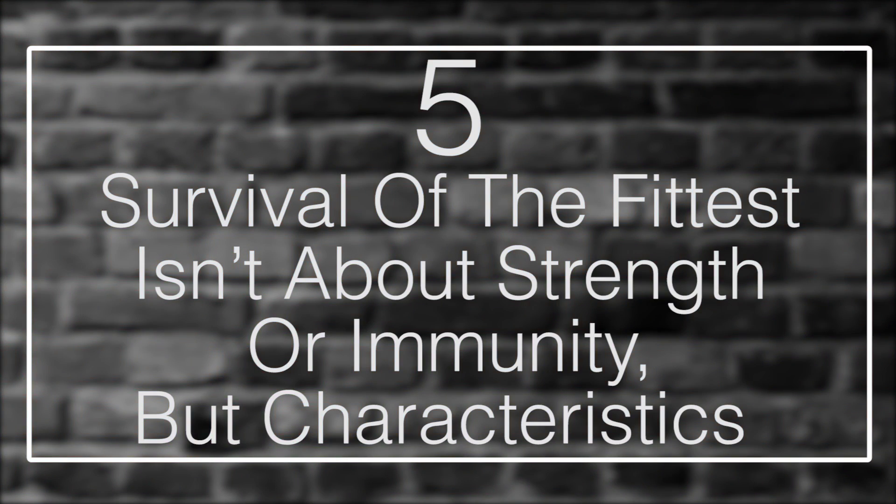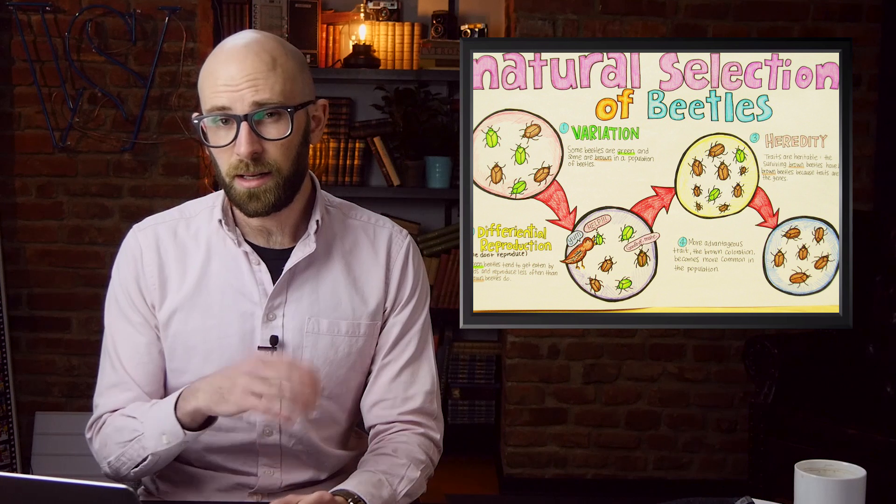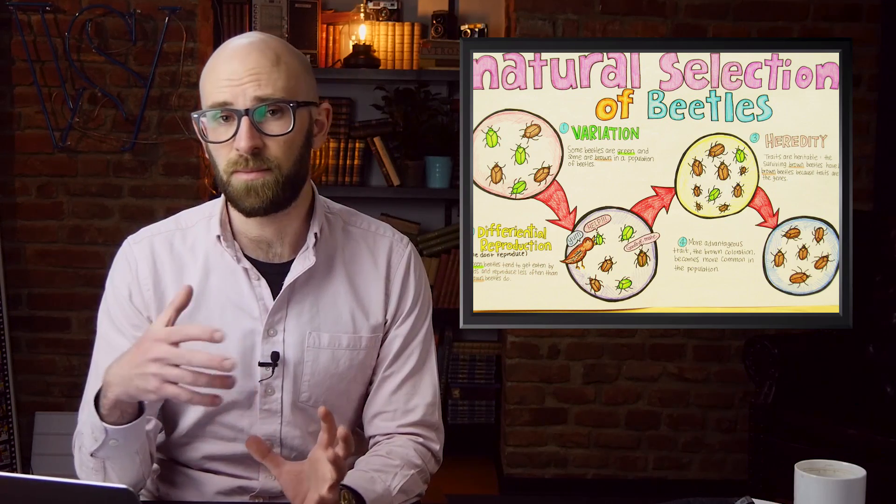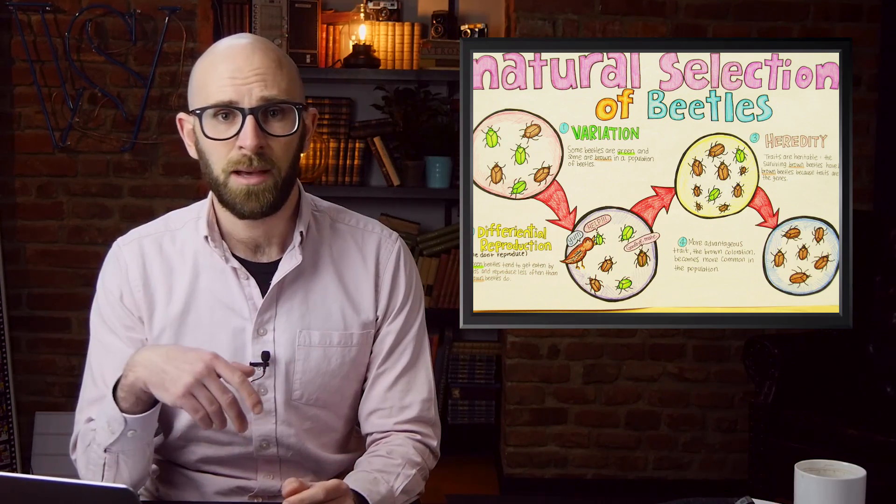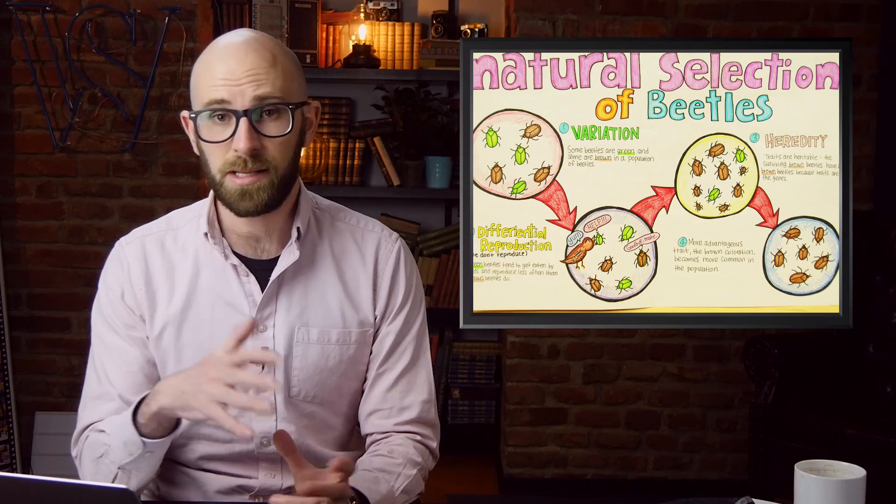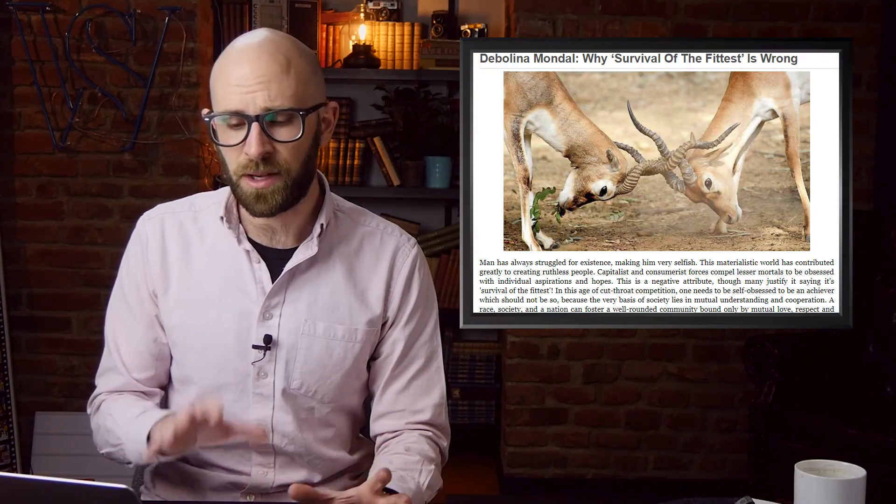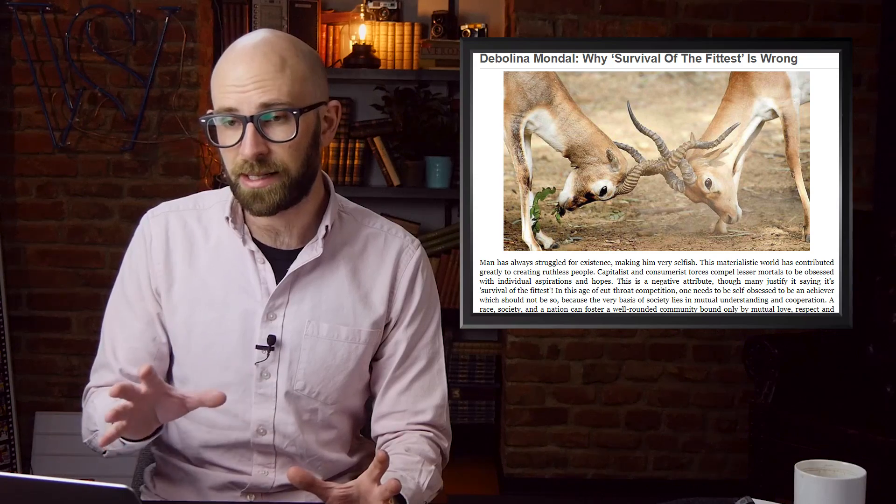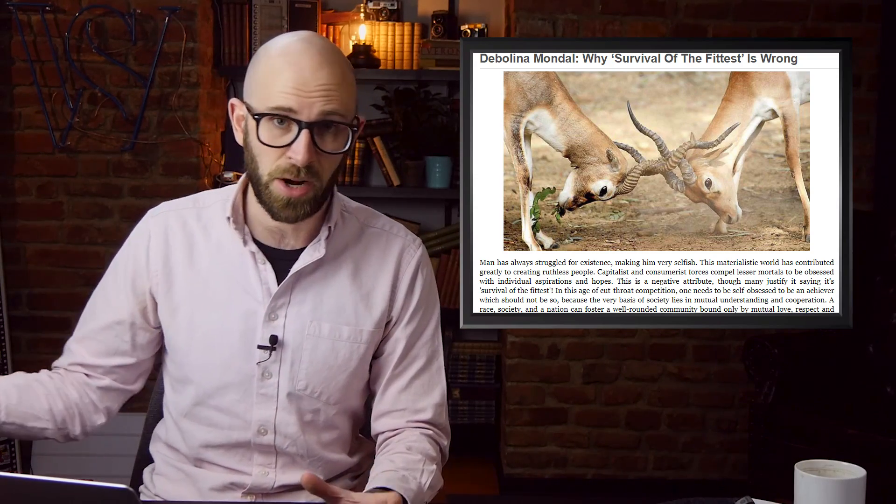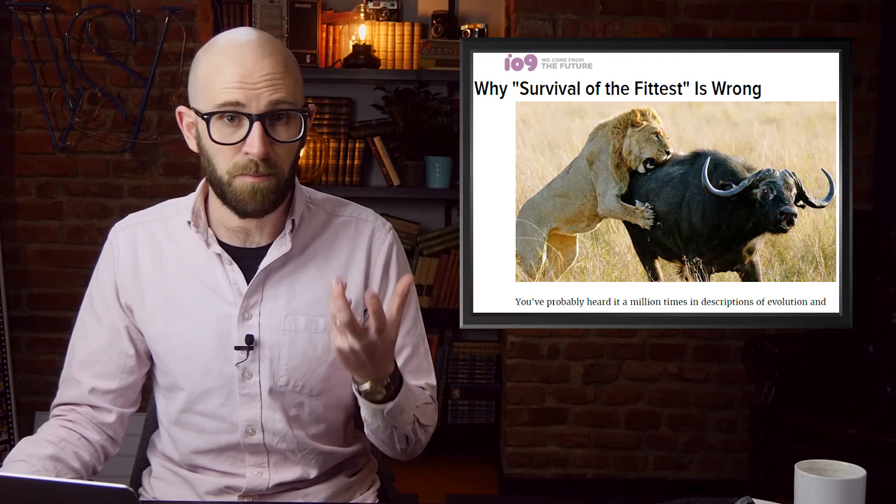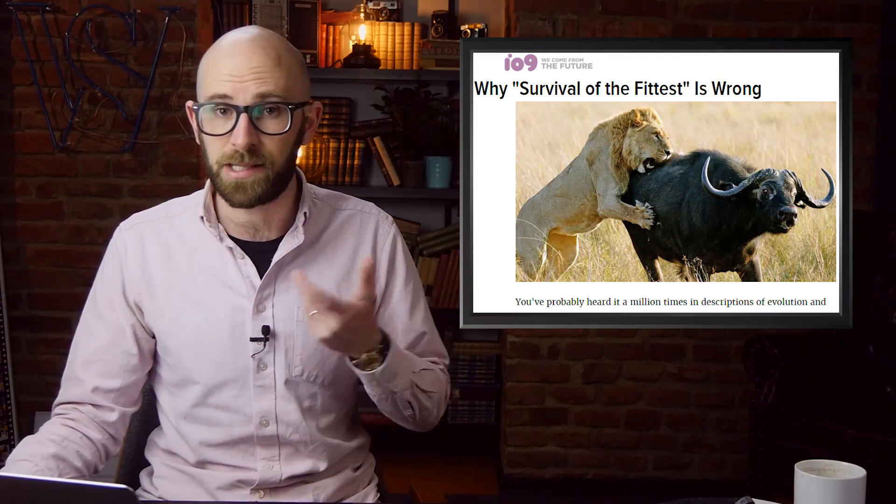Number 5: Survival of the fittest isn't about strength or immunity, but characteristics. A lot of people are taught about the theory of natural selection, but many of them come away with little memory of it except the survival of the fittest thing, which many take to mean that if you are the strongest and the toughest, you're more likely to survive. However, this is only really the case if those characteristics are what are most likely to get you to pass on your genes to a new generation. This is because the whole point of natural selection is to choose those with the best characteristics for the environment they live in.